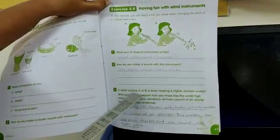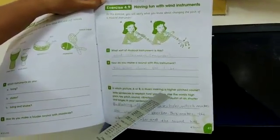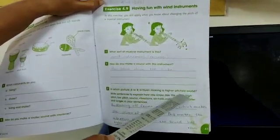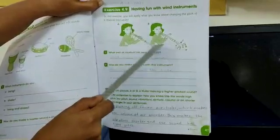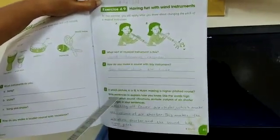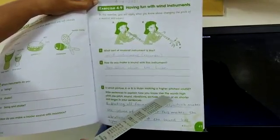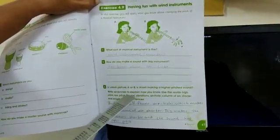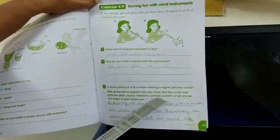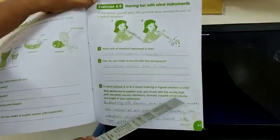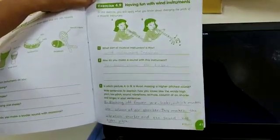In which picture A or B is the person making a high pitch sound? Write sentences to explain how you know. Use the words high pitch, low pitch, sound, vibrations, air column, column of air, shorter and longer in your sentences.